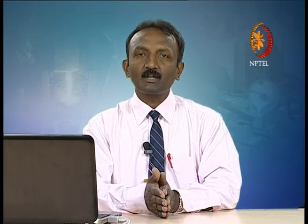In the previous class, we have seen the concept and importance of the core print. The core print is used to support the core. Let us consider the same example. This is the component which we want — this component has an axial hole. This is the axial hole; this is the axis of the job.